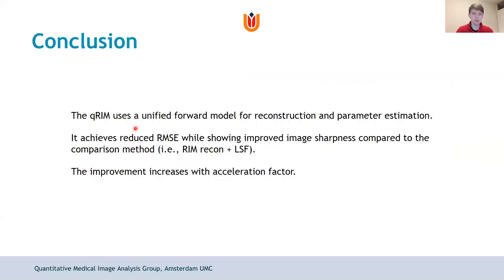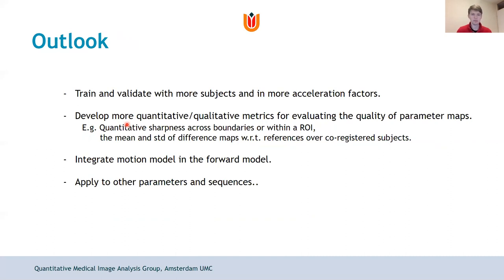In summary, we have proposed a unified forward model for joint reconstruction and parameter estimation which reduces the root mean square error and shows improved sharpness at the boundary of the putamen, with greater improvement at higher acceleration factors. We are now expanding this work to more subjects, and with this flexible approach we can also consider other quantitative parameters of interest. We also aim to evaluate our method using the sharpness metric introduced for motion correction, which we think can also be of interest in reconstruction problems.